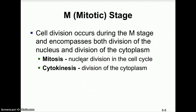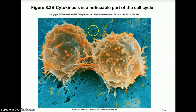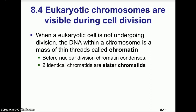In the M (mitotic) stage, cell division encompasses both division of the nucleus and division of the cytoplasm. Mitosis is the stage where the nuclear region divides; cytokinesis is where the cytoplasm divides. Here you can see two eukaryotic cells — the orange-stained cells around them represent bacteria — and this animal cell shows the presence of a cleavage furrow during cytokinesis.